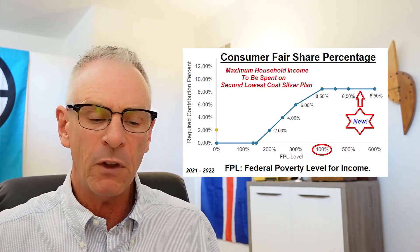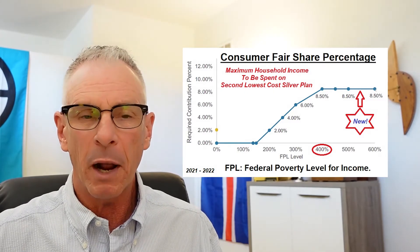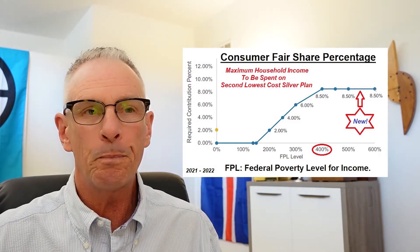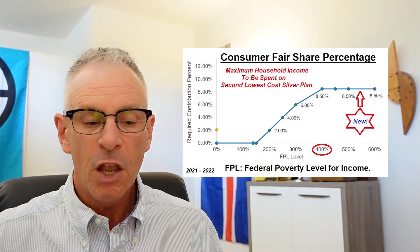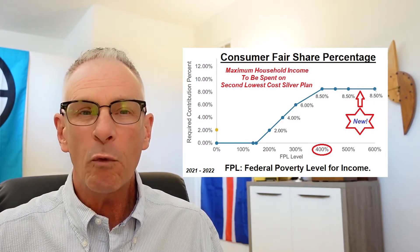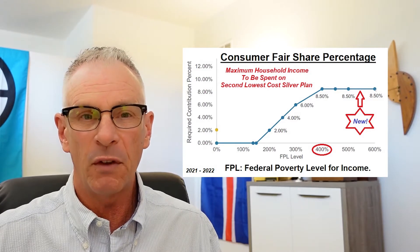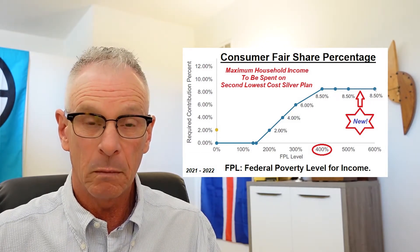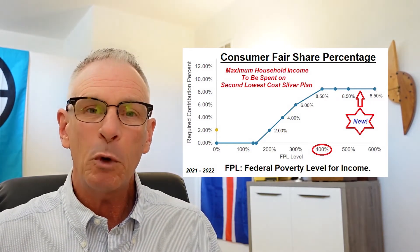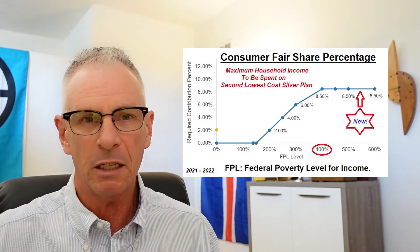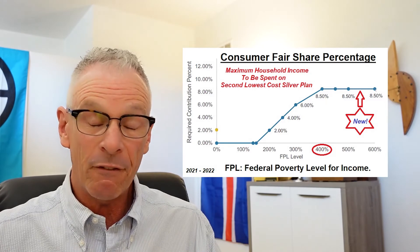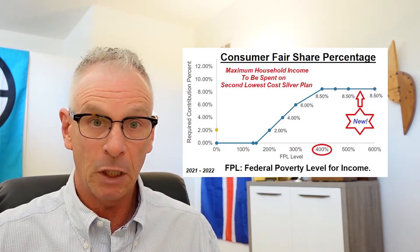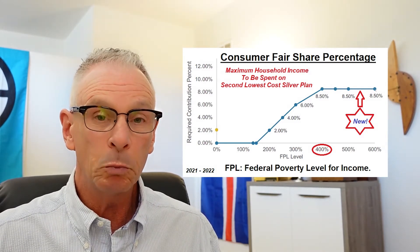The percentage tops out at eight and a half percent. The federal poverty level is determined every year by the federal government. A little example: a single individual making $50,000 a year, that income would be about 400% of the federal poverty level. If you had a household of three making $50,000, that would be about 235% of the federal poverty level. So obviously that family of three, because their income is less in terms of the federal poverty level, their consumer fair share is smaller.